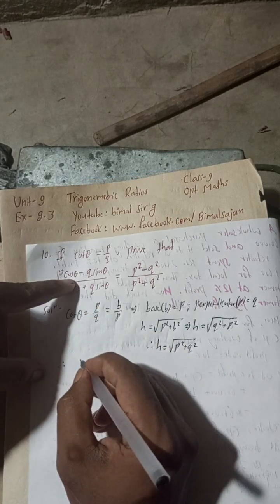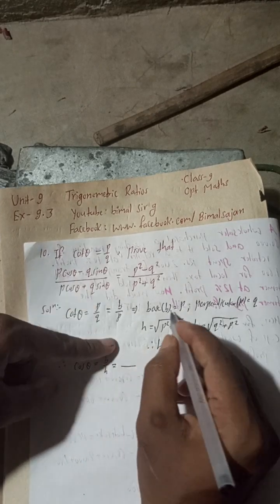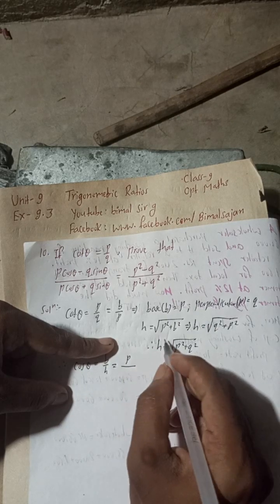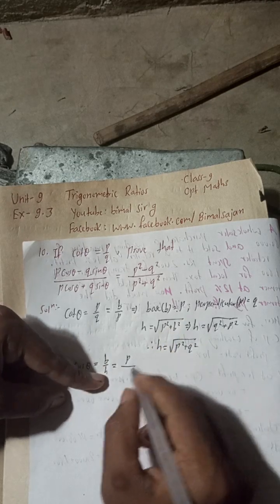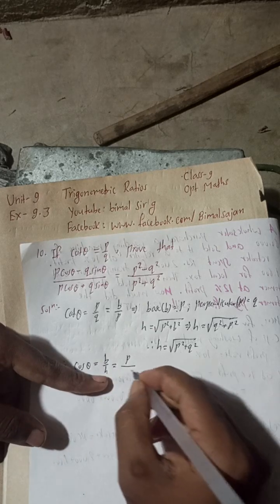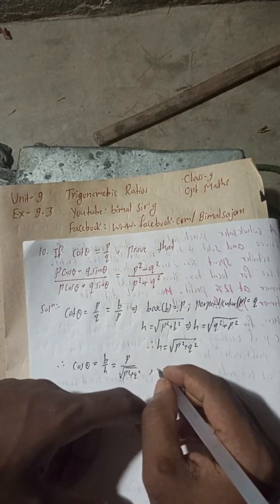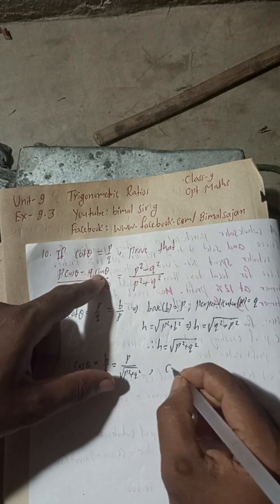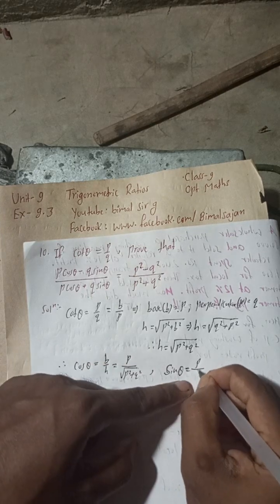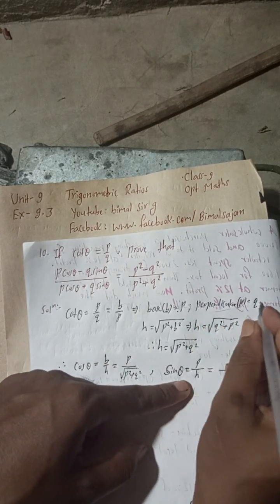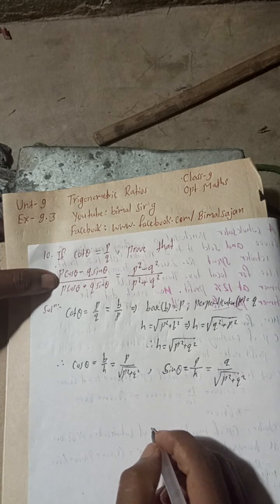Now we find cos θ: cos θ equals base over hypotenuse, so cos θ equals p over root under (p squared plus q squared). Similarly, sin θ equals perpendicular over hypotenuse, so sin θ equals q over root under (p squared plus q squared).